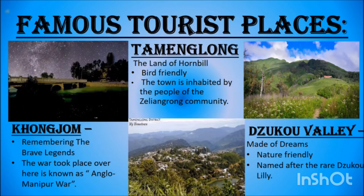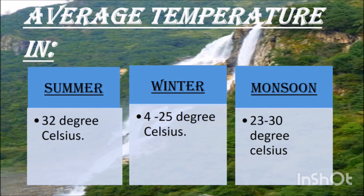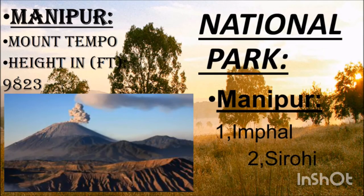Famous tourist places in Manipur: Khongjom remembers brave legends — the Anglo-Manipur War took place there. Tamenglong is the land of Hornbill and is inhabited by the Zeliangrong community. Dzuko Valley is nature-friendly and named after the Dzuko lily. Average temperature in Manipur: summer 32 degrees Celsius, winter 4 to 25 degrees Celsius, monsoon 23 to 30 degrees Celsius. Mount Tempu in Manipur is 9,008 feet. Imphal and Sirohi are national parks found in Manipur.